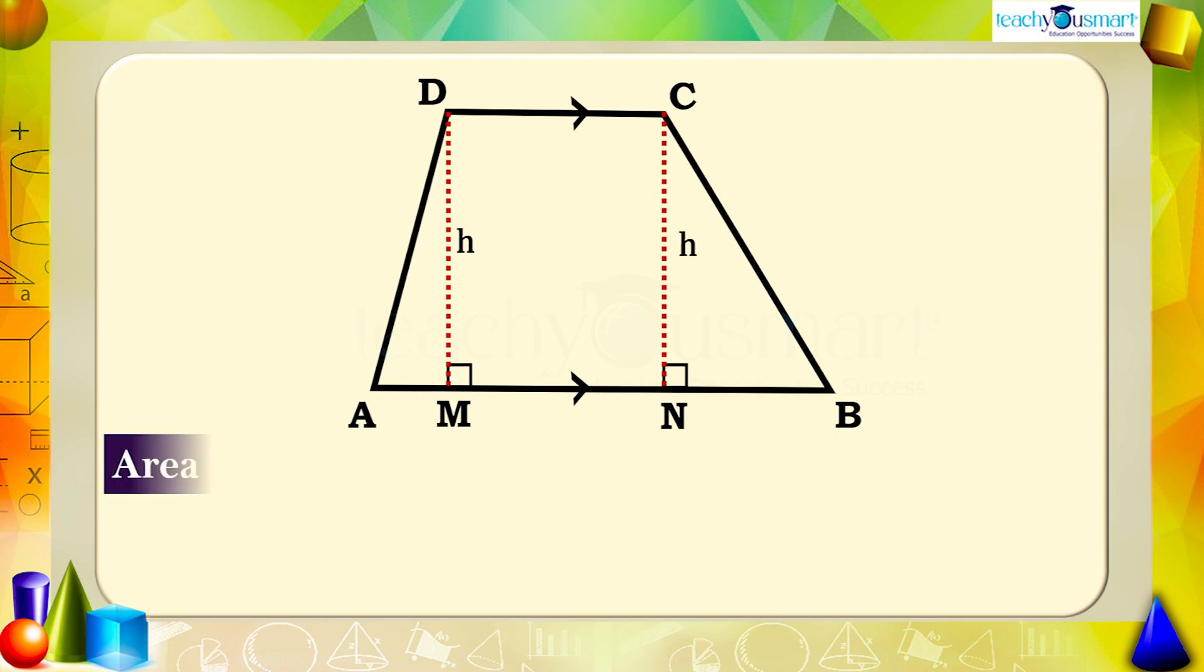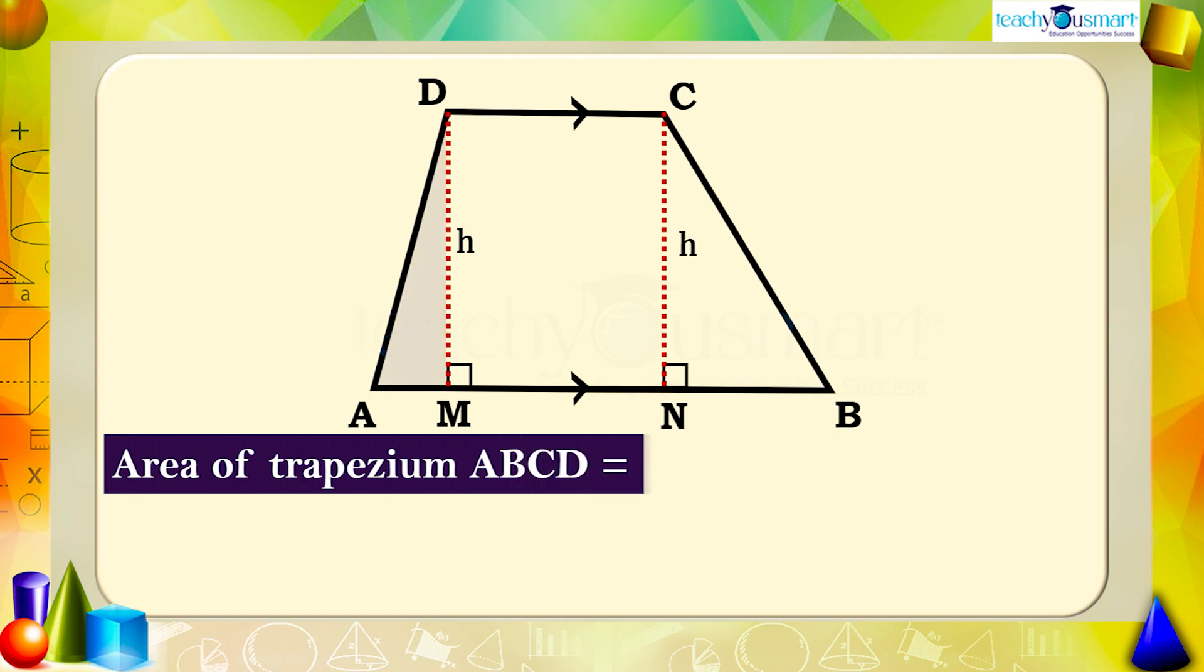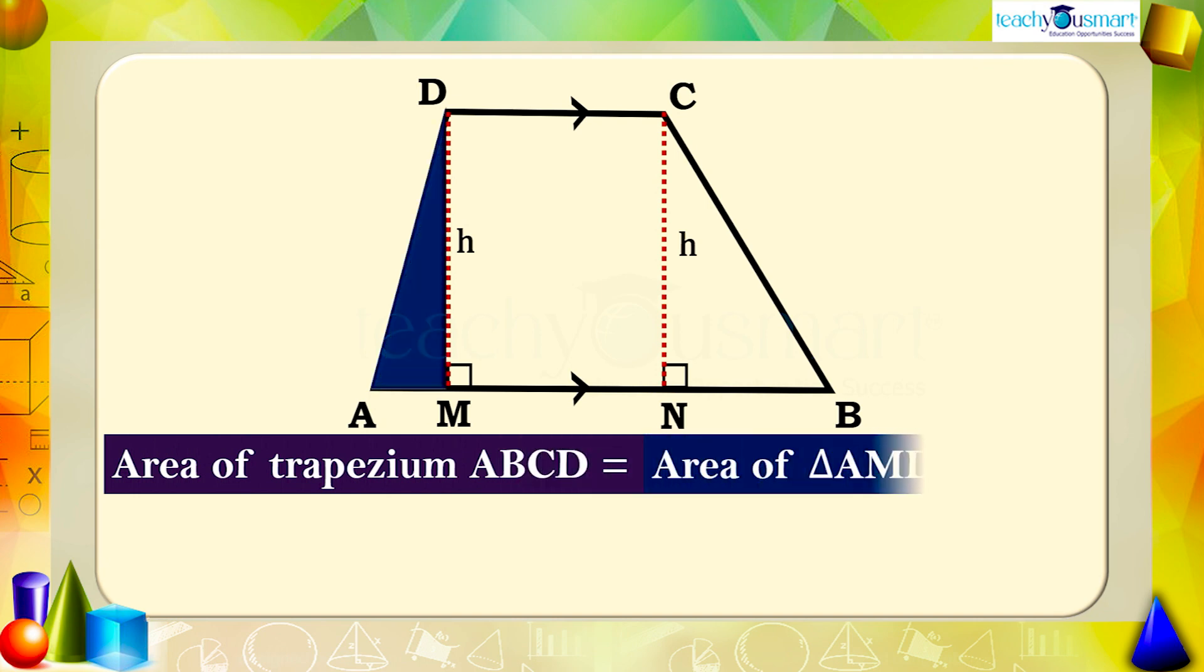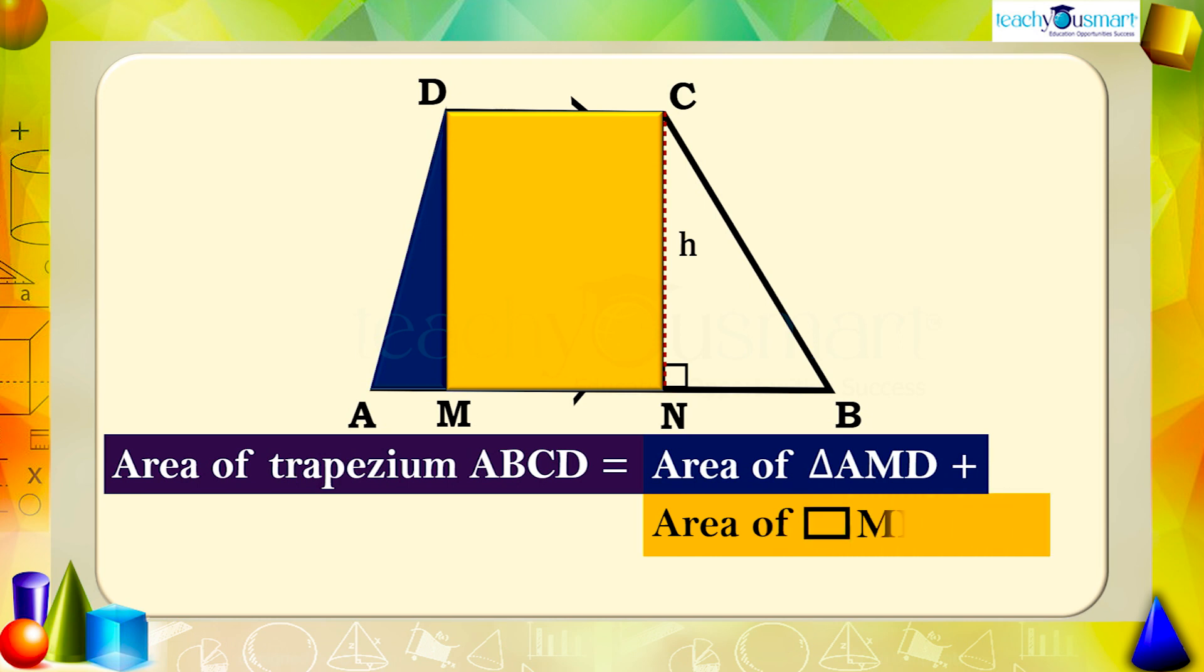That is, area of trapezium ABCD equals area of triangle AMD plus area of rectangle MNCD plus area of triangle BNC.